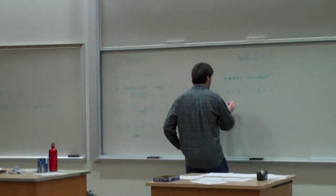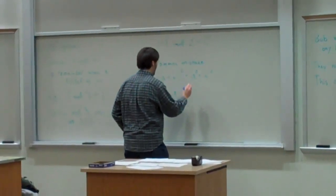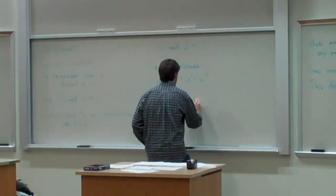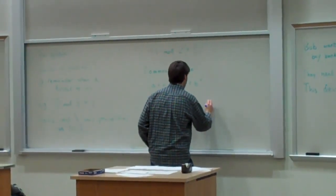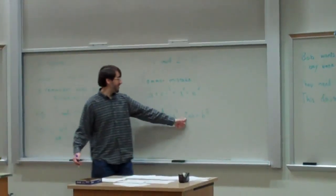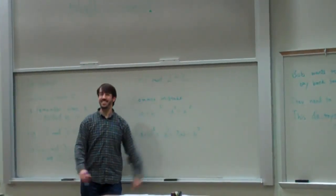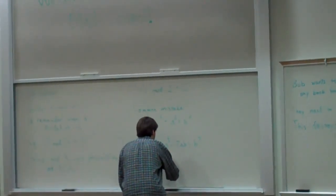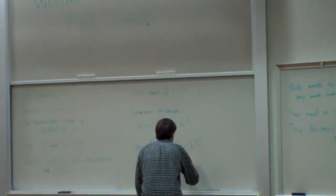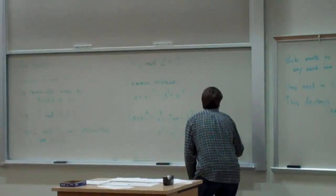Because, if you consider this, so A plus B squared is A squared plus 2AB plus B squared. And if I take this mod 2, 2 becomes 0. And so, the cross term goes away. So, this is equal to A squared plus B squared, mod 2, since 2 is equal to 0.